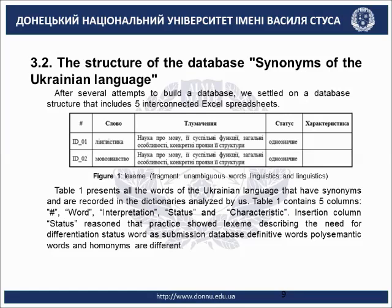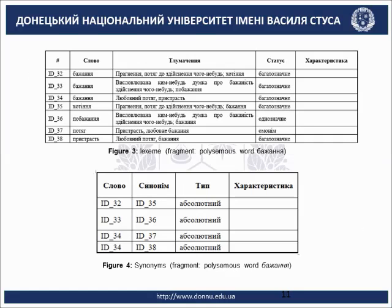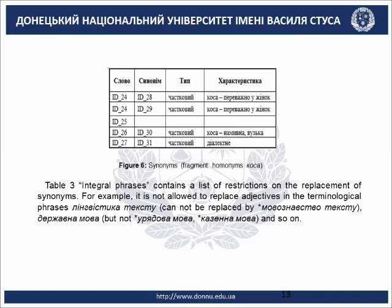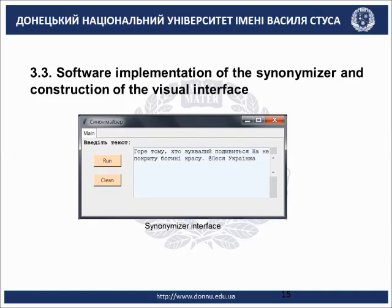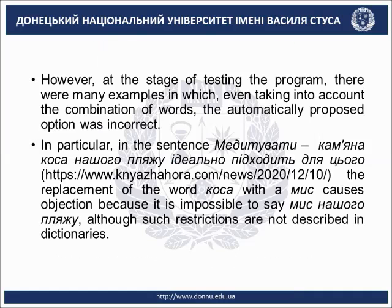Here you can see some examples. Software implementation of the synonymizer and construction of the visual interface. Example of synonymizer program operation: manual selection of synonyms of a word. An example of incorrect operation of the program — the synonym for the word «коса» taken into account.